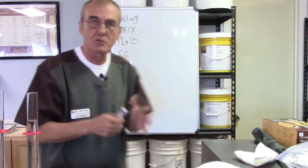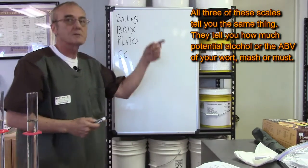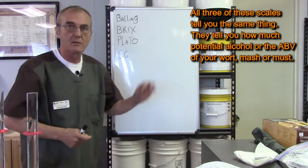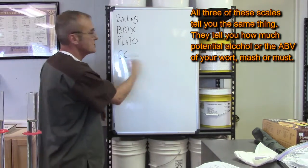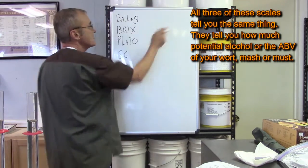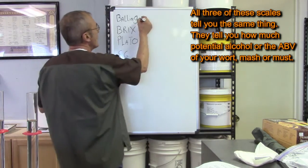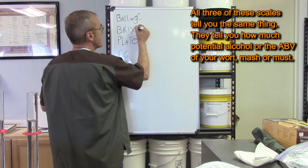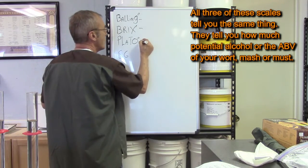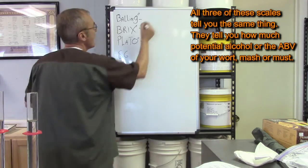But what I wanted to explain first is I want to explain the differences in the scales because you'll hear these terms going around. There's a balling scale, there's a bricks scale, there's a Plato scale, and those are all degrees. And then there's a specific gravity scale, which we're all accustomed to. Here it is in short. The balling scale was the original scale developed back in the early 1800s. And what it does, it's a degree, degree, and a degree. And what it does is it starts its measurement with water with nothing in it at zero.